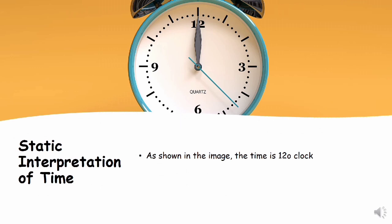The next thing to consider is static interpretation of time. This is a clock here. And looking at the clock, you'll find that the short hand and the long hand are both on 12. That is to say, the time is 12 o'clock.